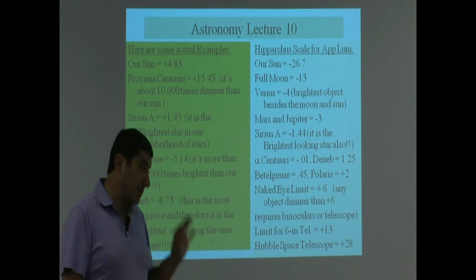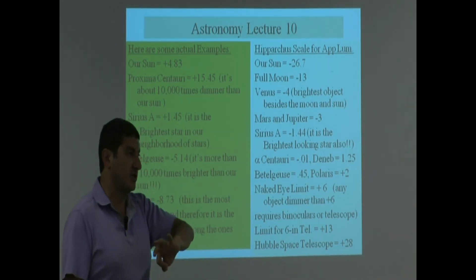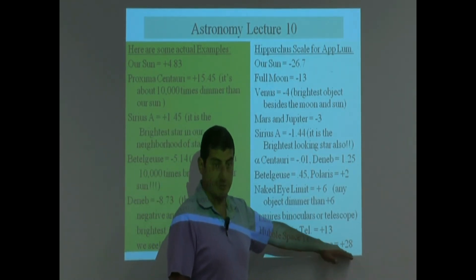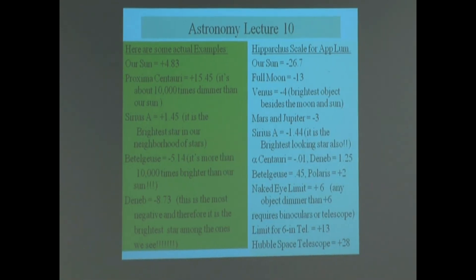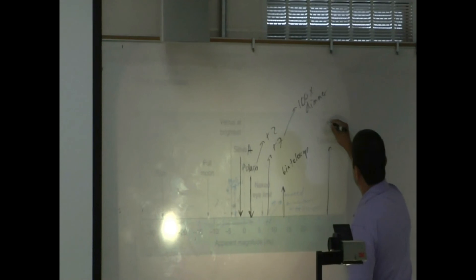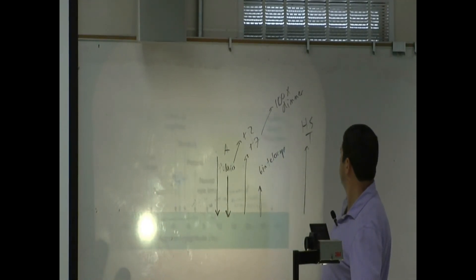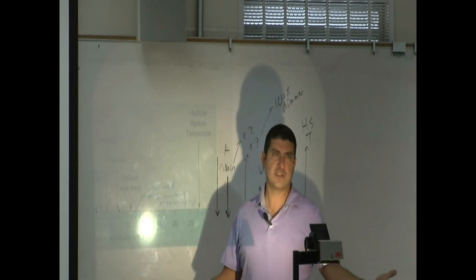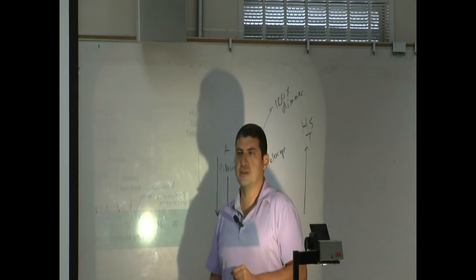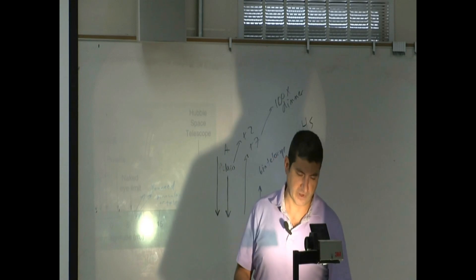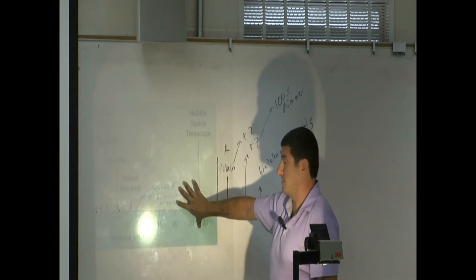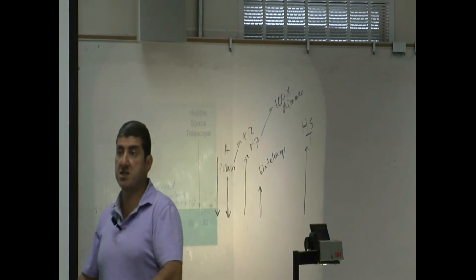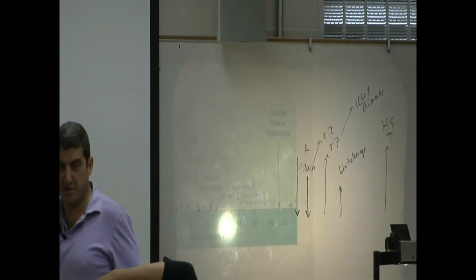The Hubble Space Telescope can see objects as dim as positive 28 on this scale. You can go online and look at Hubble images — it gives us amazing images of things we could not otherwise see. At that level of sensitivity, we're seeing objects in other galaxies and even in other superclusters of galaxies.